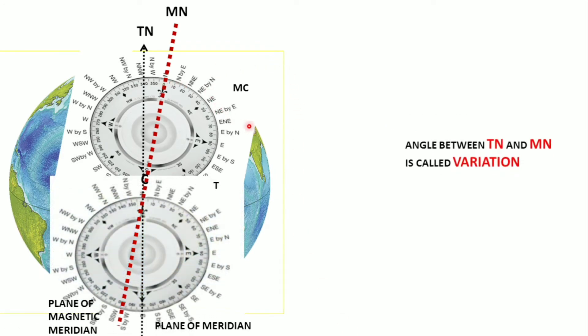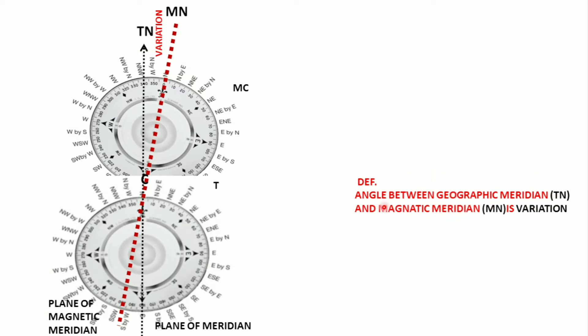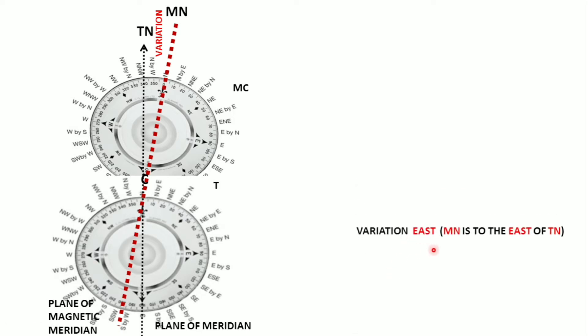The angle between magnetic north and true north — the difference between them — is called variation. You need to define it as the angle between the geographical meridian and the magnetic meridian. Variation is named either east or west depending upon where your magnetic north is relative to true north. Here you can see it is to the east of true north, so variation is east.